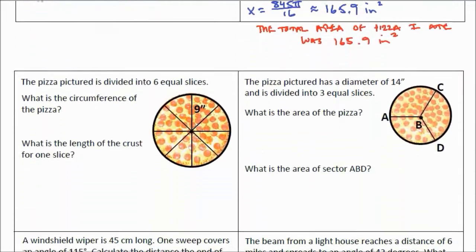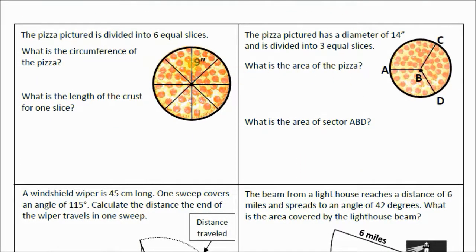Alright, let's go to the bottom flap. Next question. The pizza pictured is divided into six equal slices. What is the circumference of the pizza? When you look, you can see this nine here with a symbol for inches. That's not talking about angle measure because it's not in degrees. That's giving us the radius of the circle, which is nine inches. Since we know the circumference is equal to 2πr, then it's 2π times 9, which equals 18π inches. So the circumference of this pizza, or the length of the crust, is 18π inches.